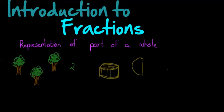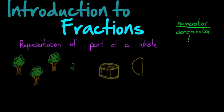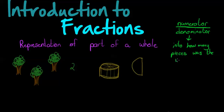How do we use fractions? A fraction looks like this: it has a numerator on top and a denominator on the bottom, separated by the divide line. The denominator tells you into how many pieces the whole thing was divided.